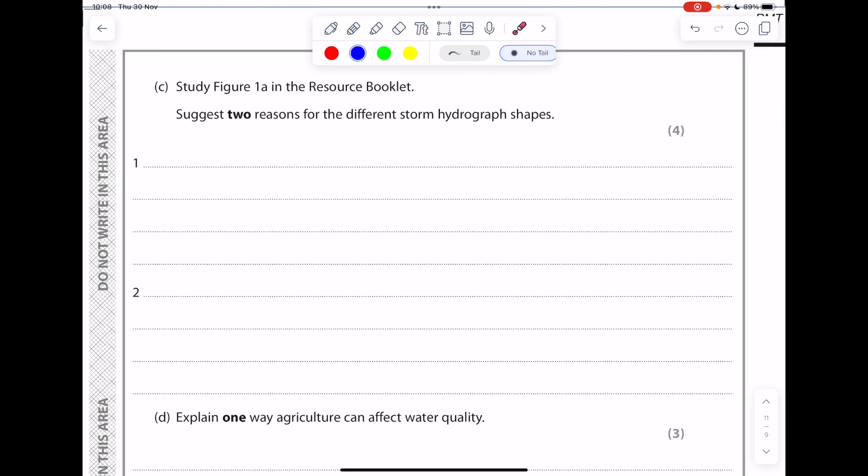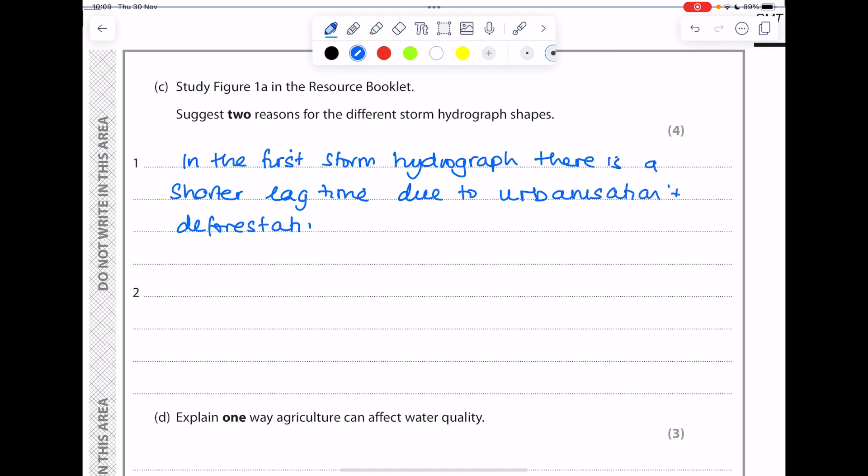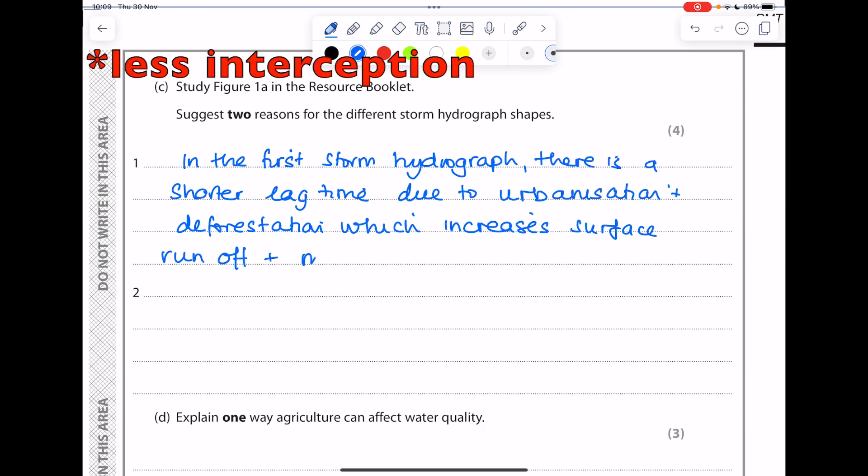So we are going to state those differences and then give a reason for it. So in the first storm hydrograph, there is a shorter lag time. And that could be due to urbanization and deforestation, increasing surface runoff and means less interception takes place. Make sure you write a nice full answer here.